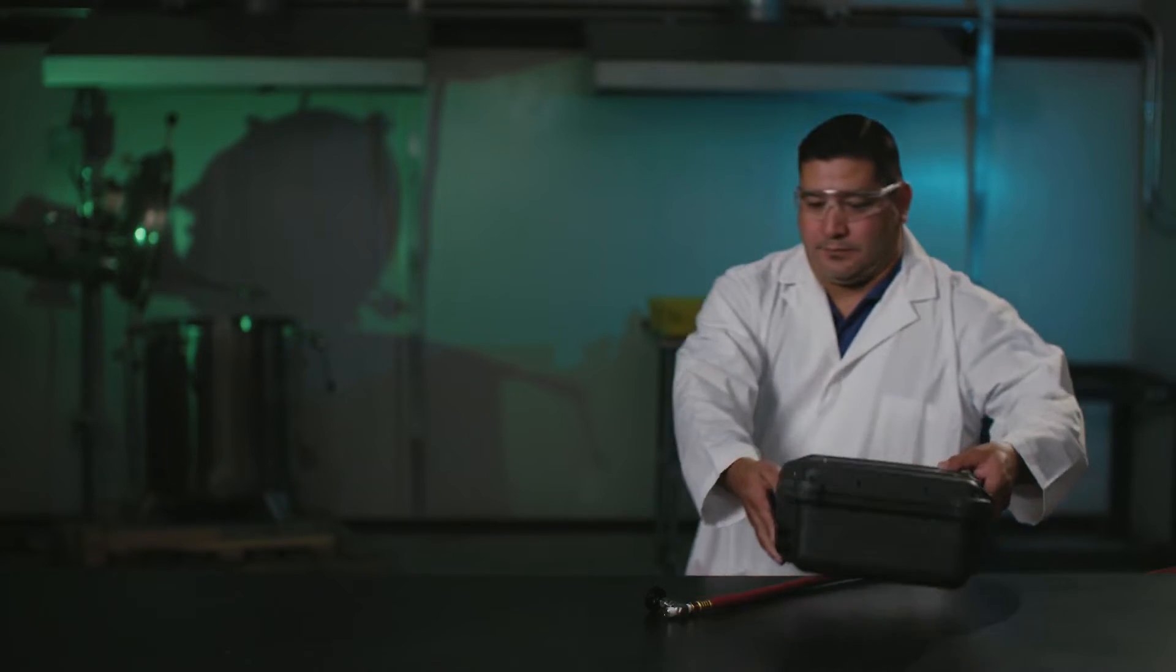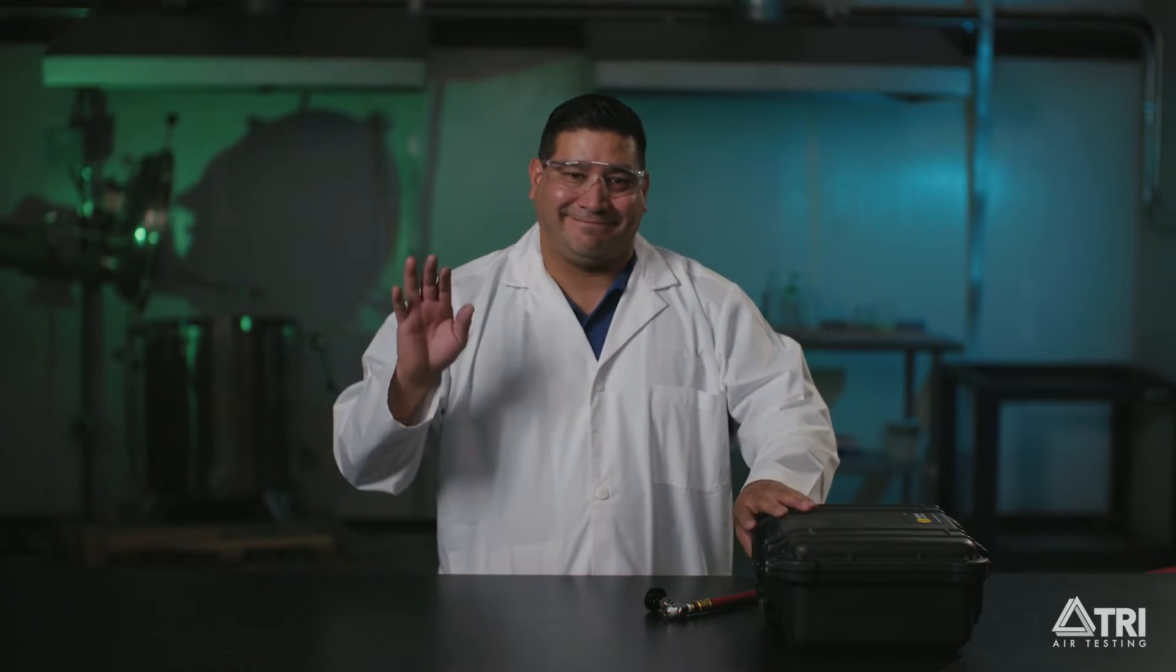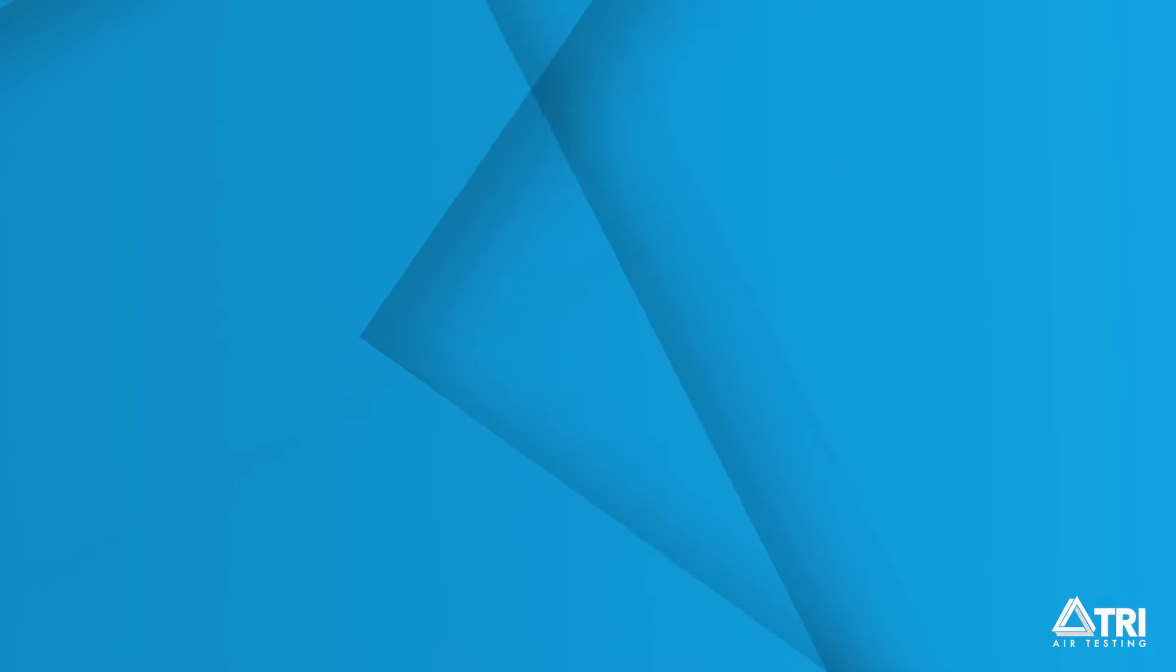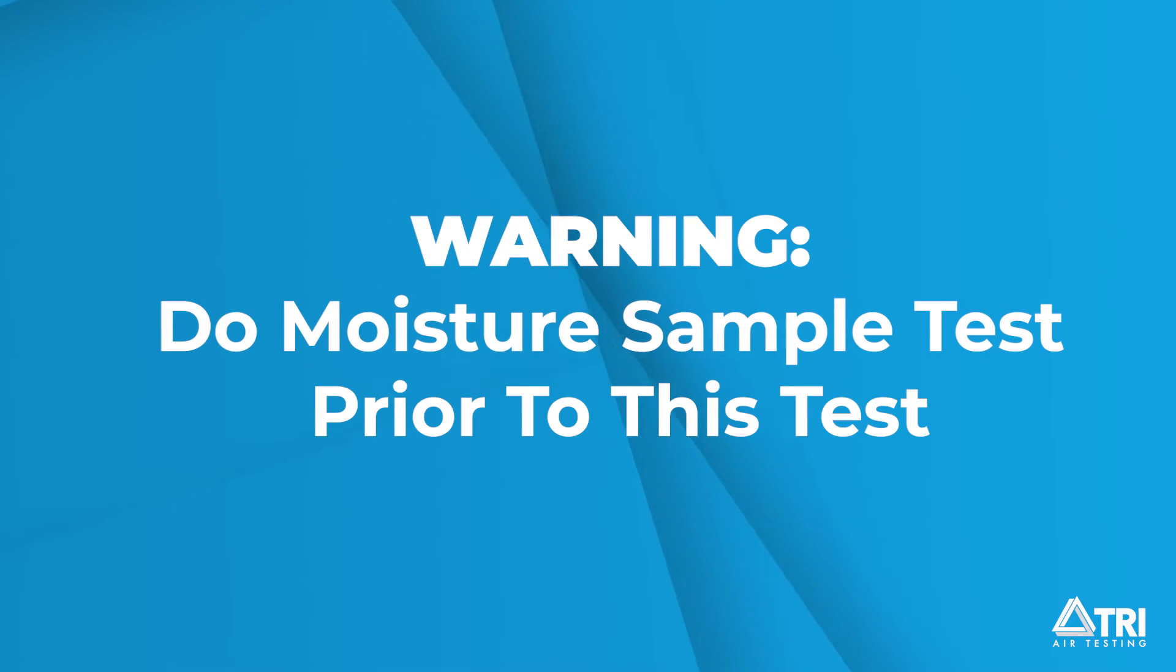This is Sam. He's going to walk you through completing an air moisture test using the Champion 35 test kit. Step 1: If a moisture sample is to be obtained, go to moisture sampling and perform the test before continuing with this air sampling test.